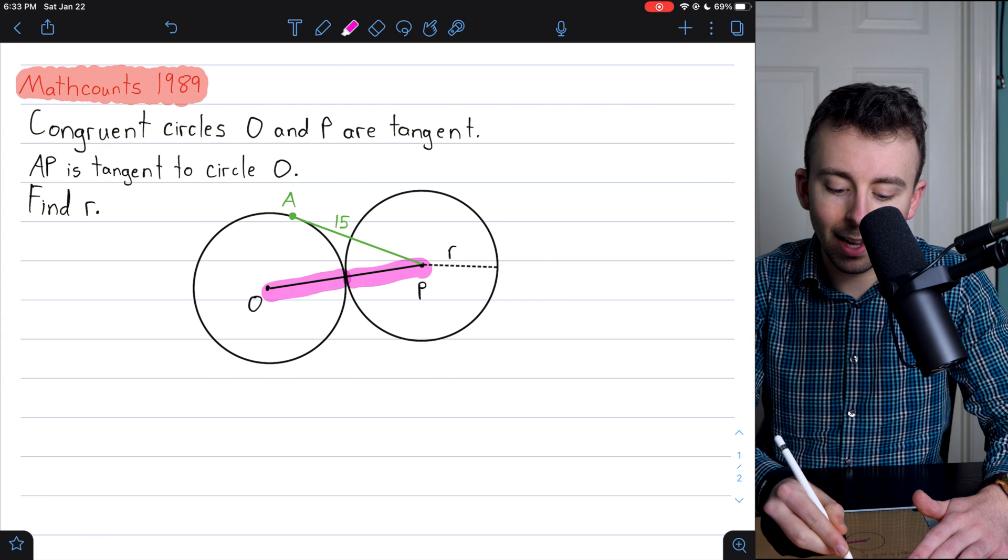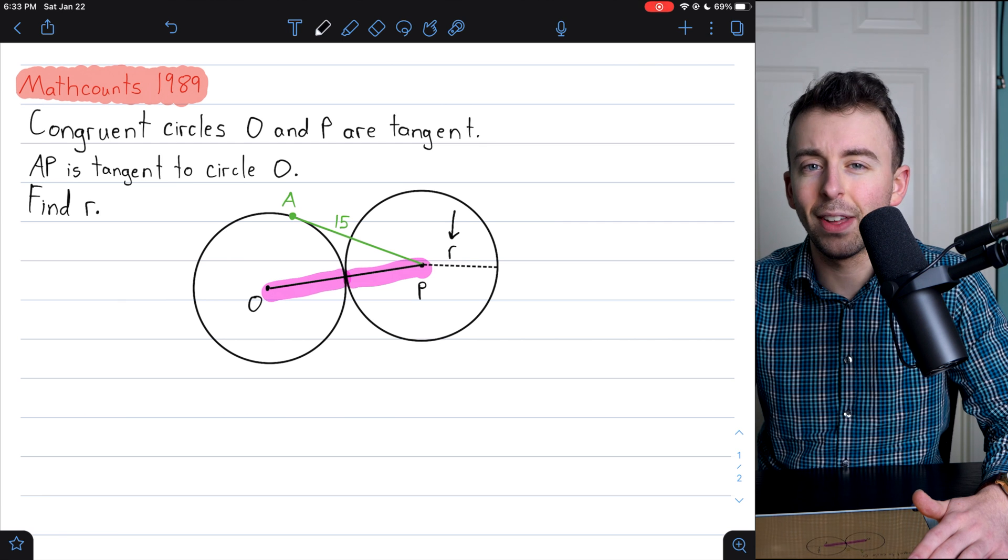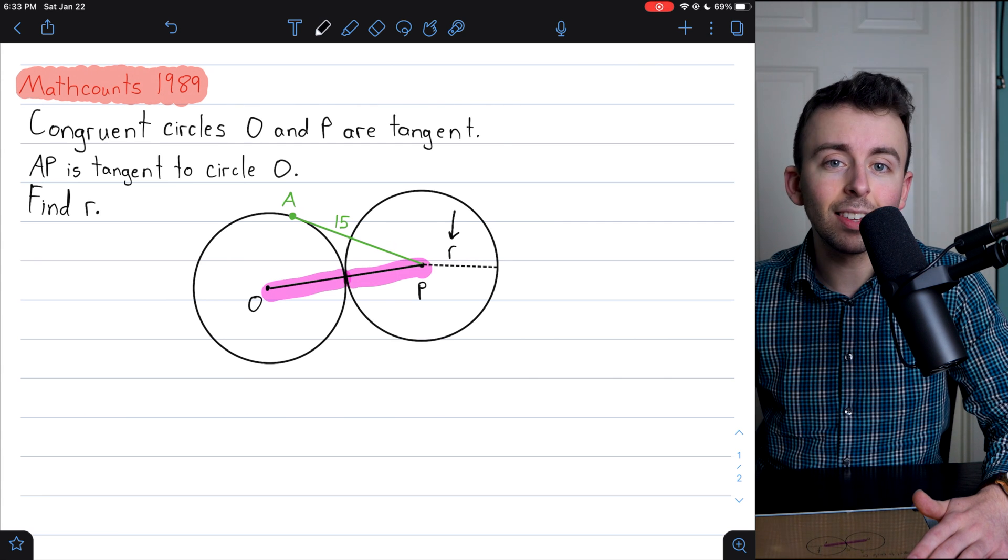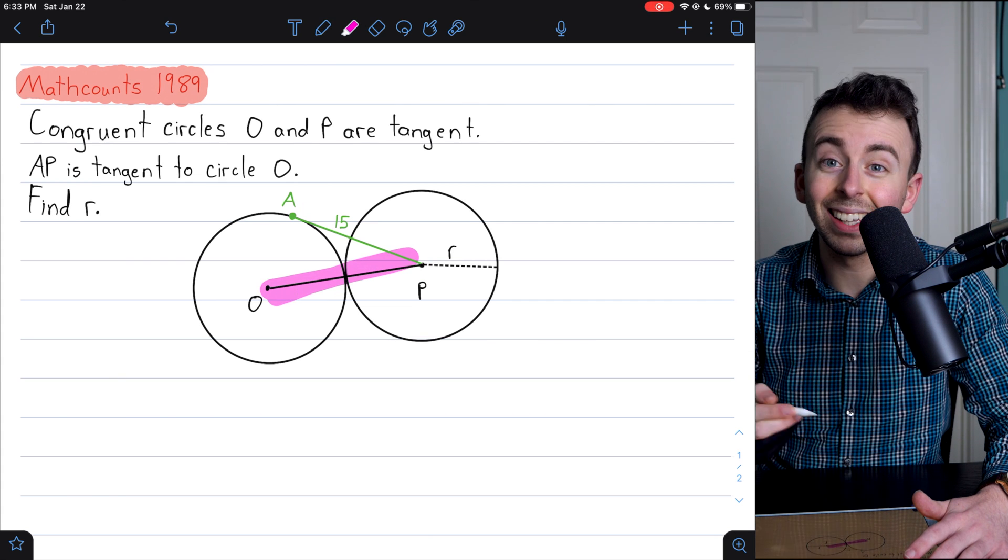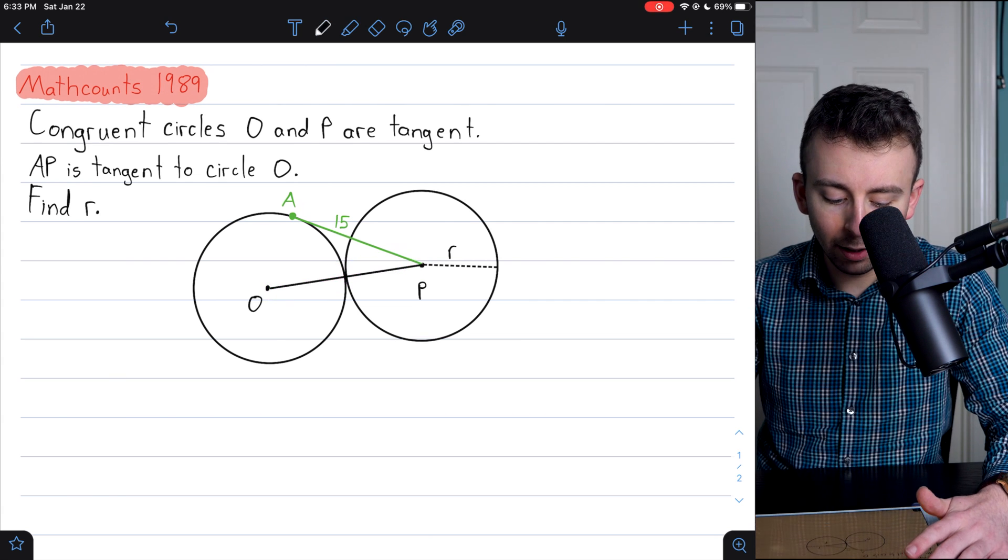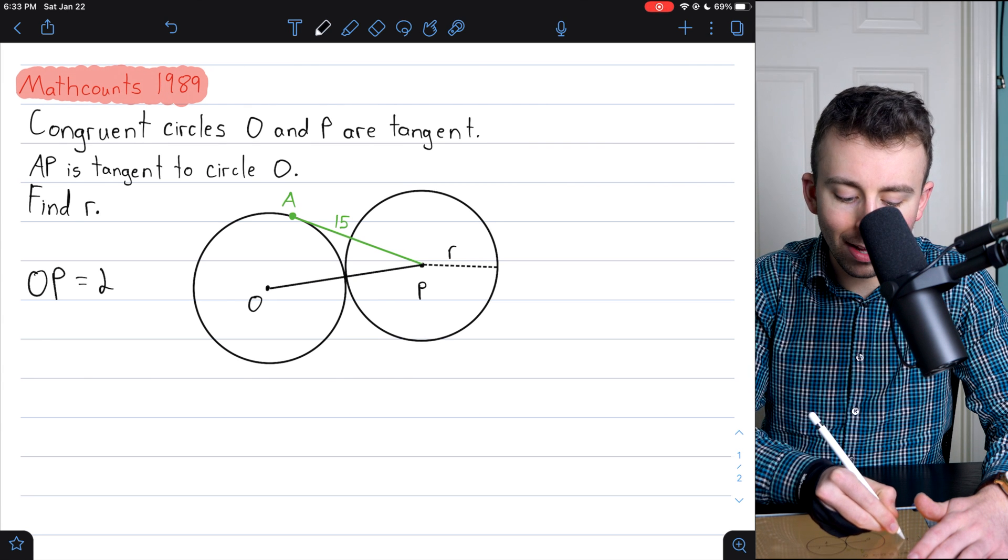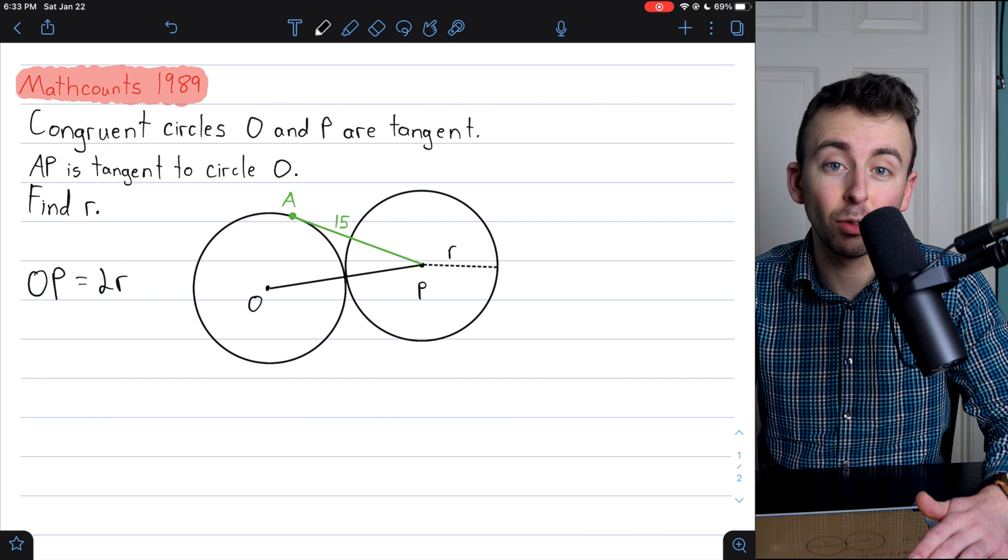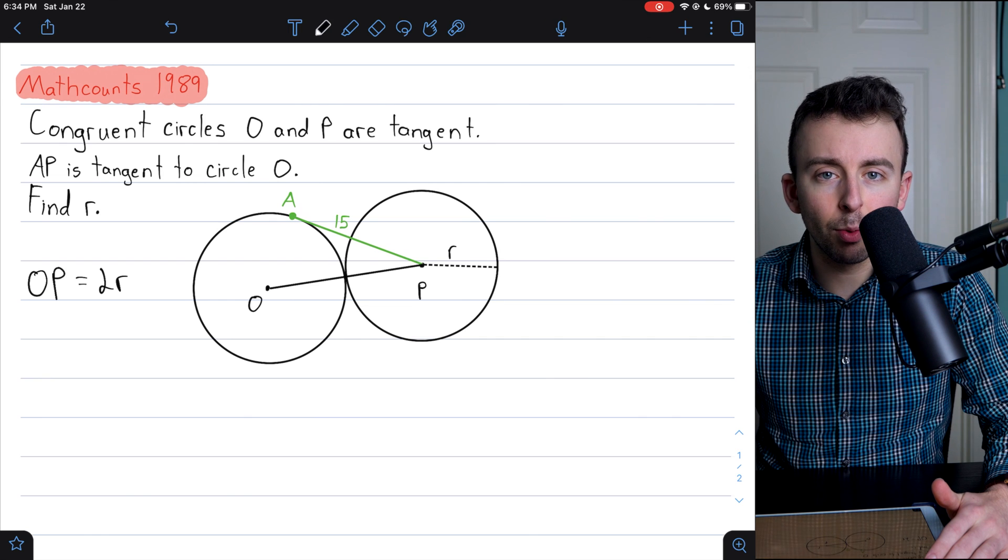So it's entirely composed of this radius of circle P and this radius of circle O. Both of those radii have the same length, which we'll just call R. Again, that's because these circles are congruent. So if we join the centers of these circles, we're going to get this segment with length 2R. So let's write that over here: OP equals 2R as kind of our shorthand for saying that's what its length is. Like I said, we'll need that for all three solutions.